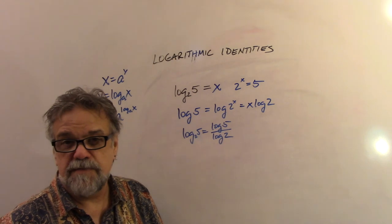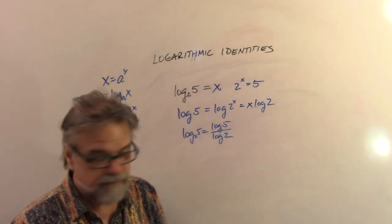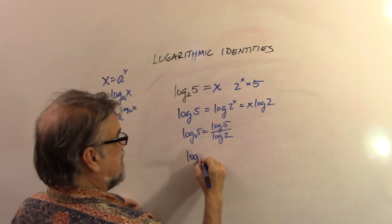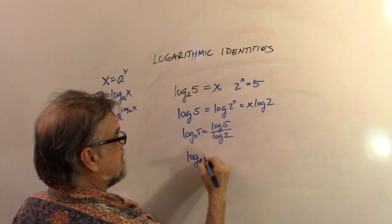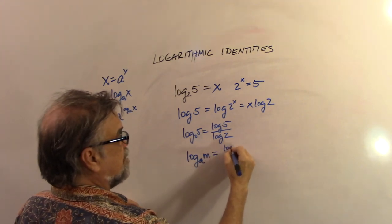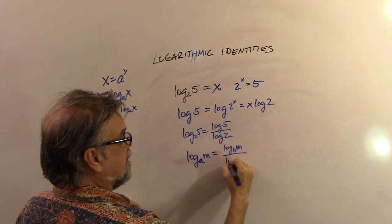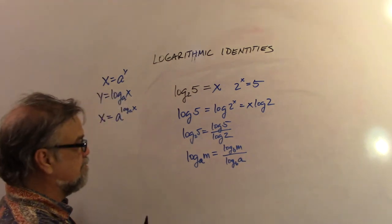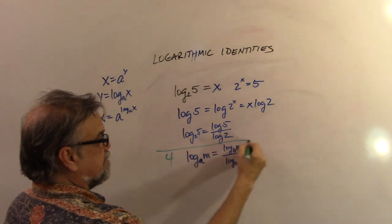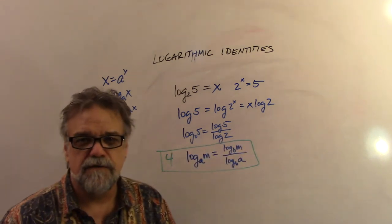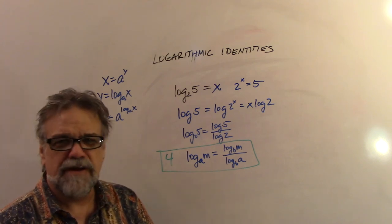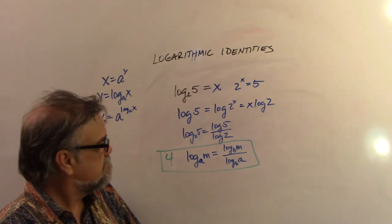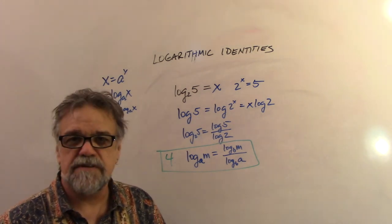There was nothing special about 2, 5, and 10 here. You can make the same argument in general: log base a of m equals log base b of m divided by log base b of a. That is the fourth identity — the change of base formula. Rather than three fundamental logarithmic identities, we really ought to have four, because this base-changing identity is pretty important. Okay, I think that's good enough for right now. I will see you at the next video. Bye-bye.